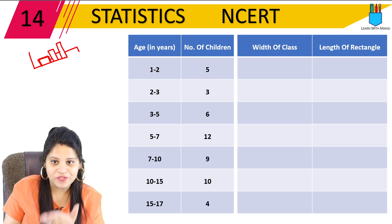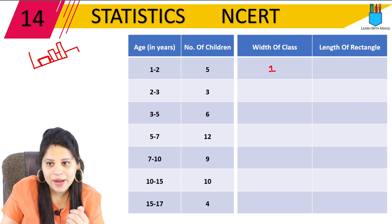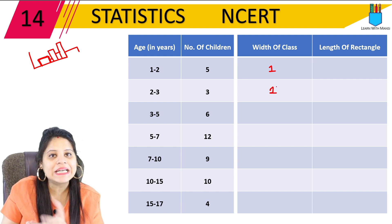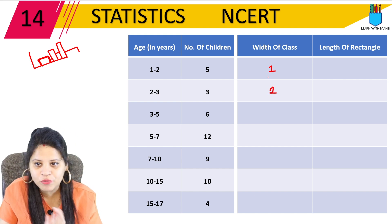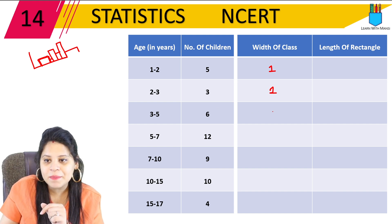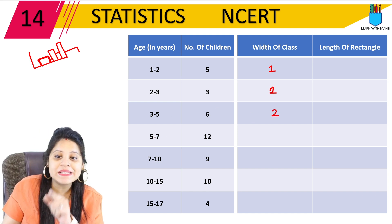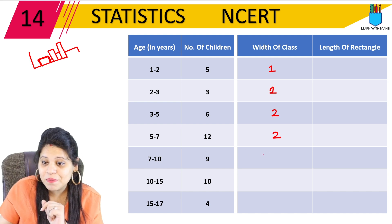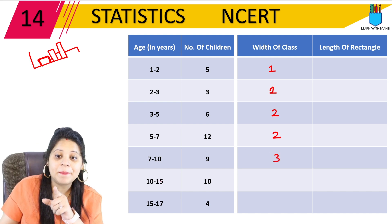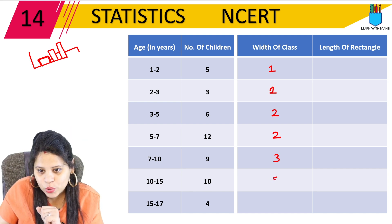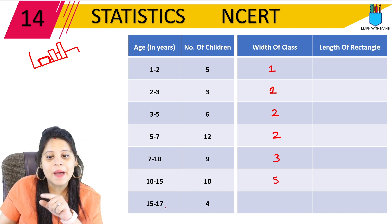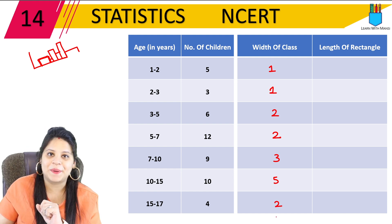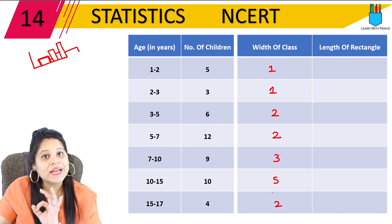The width of class is simple: 2 minus 1 is 1, 3 minus 2 is 1, 5 minus 3 is 2, 7 minus 5 is 2, 10 minus 7 is 3, 15 minus 10 is 5, 17 minus 15 is 2. So the widths are 1, 1, 2, 2, 3, 5, and 2.